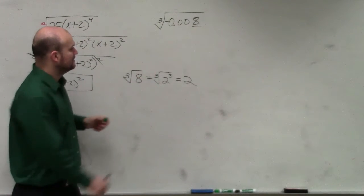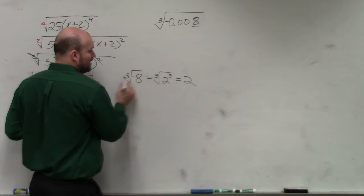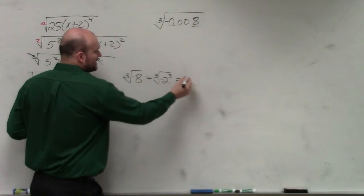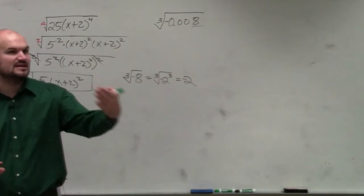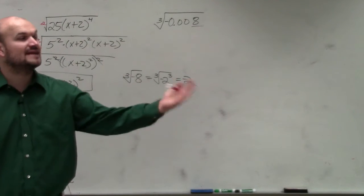Now, first of all, this is negative. So if that was a negative 8, then that would be a negative 2. Because negative 2 times negative 2 is positive 4, times negative 2 would give us a negative 8.